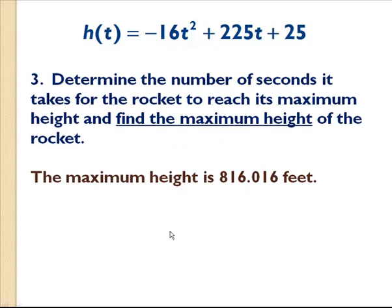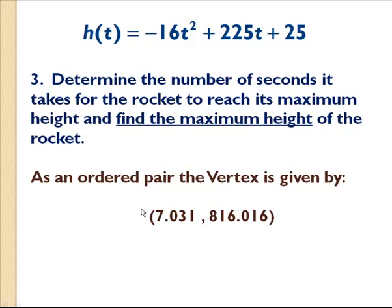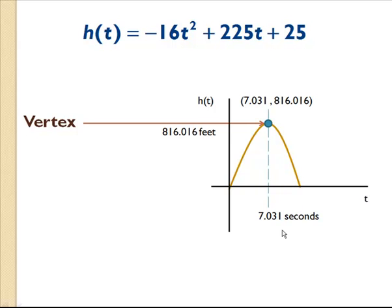So the maximum height is 816.016 feet. Many times on a test I might ask for the vertex as an ordered pair: you take the axis of symmetry, plug it into your original equation to get the height, and that gives you the y-component of the ordered pair. Graphically, this axis of symmetry represents the time to reach maximum height, and 816.016 feet is the maximum height of the rocket.